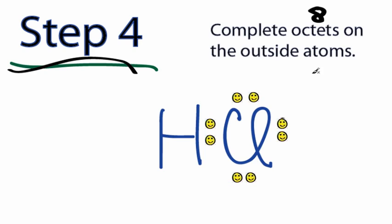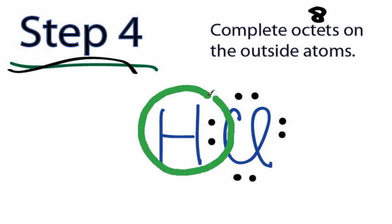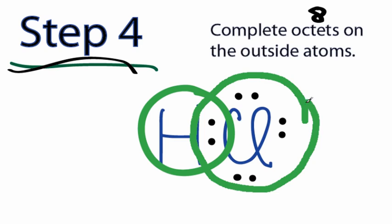For basic Lewis structures, the big exception is going to be hydrogen. It only needs two valence electrons for a full outer shell. So hydrogen has a full outer shell with two valence electrons. The chlorine, its octet is full with eight, and we've used only the eight valence electrons that we have for the HCl molecule. We're done with this structure. There's one more rule that we need to look at. It doesn't apply to HCl, and actually it doesn't apply to a lot of molecules.